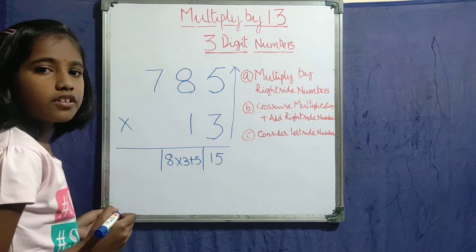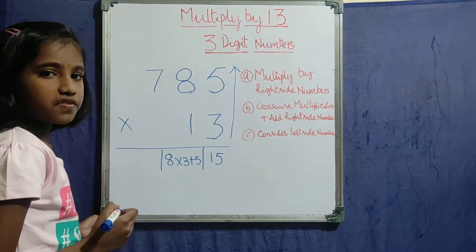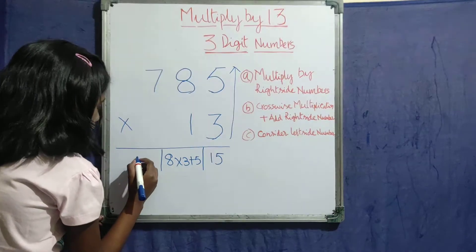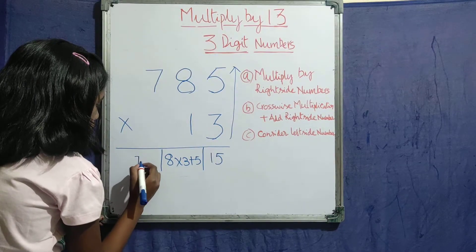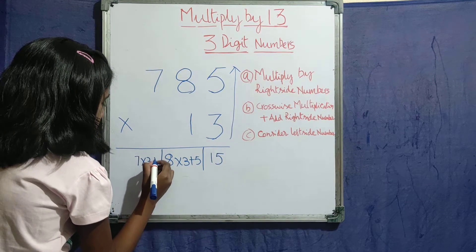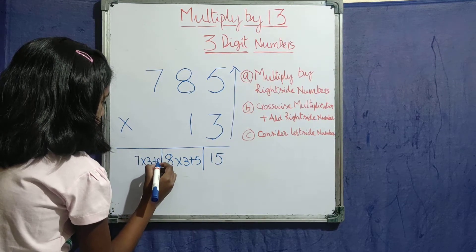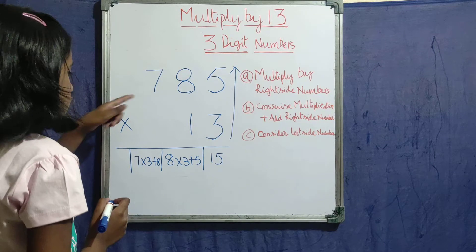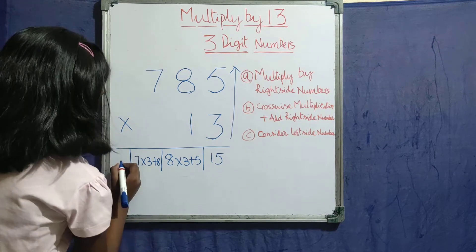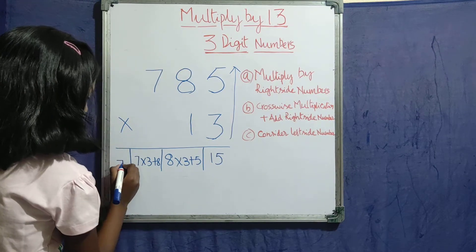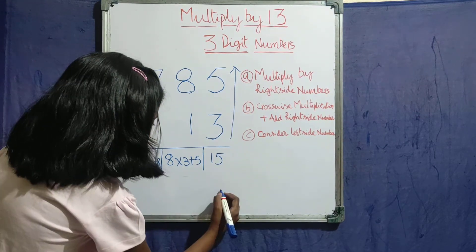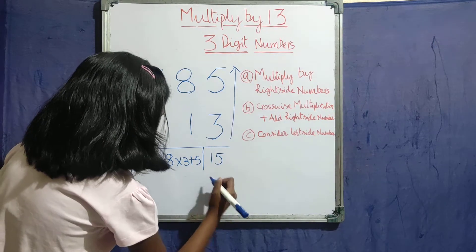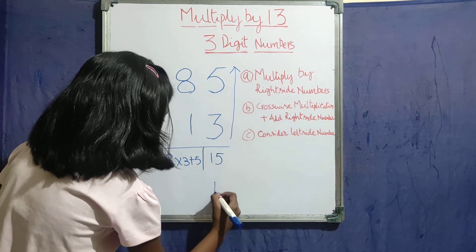Next also we should do crosswise multiplication — 7 into 3 plus 8. So we have to write 7 here. Now write this 15 down.